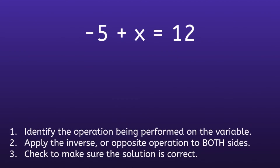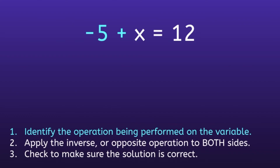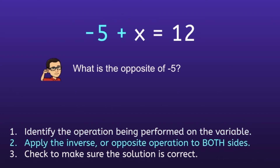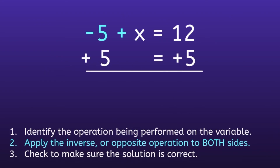Example Number 3 is a little bit trickier, but we can handle it. The variable is X. Step 1: Identify the operation being performed on the variable. On the left side, the operation is negative 5 plus X. A common error is that students see a plus sign and automatically subtract 5 from both sides, but we have to be careful — the 5 is a negative number. So we should think: what is the opposite of negative 5? If you said positive 5, you are correct. Step 2: Apply the inverse or opposite operation, meaning we add 5 to both sides.